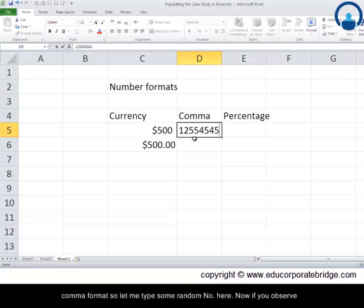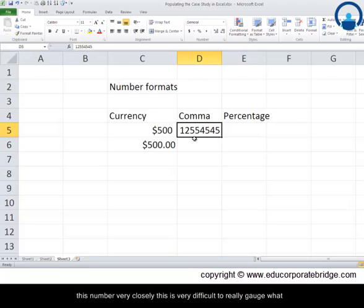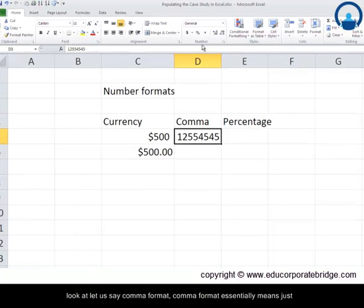The other set of format is basically related to the comma format. So let me type some random number here. Now if you observe this number very closely, this is very difficult to really gauge what this number actually is, how many digits it contains.